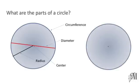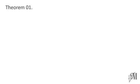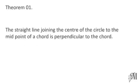If any two points of a circle are joined through a line, these lines are called chords. Remember, the diameter is the longest chord of a circle. Let's move on to the first theorem.